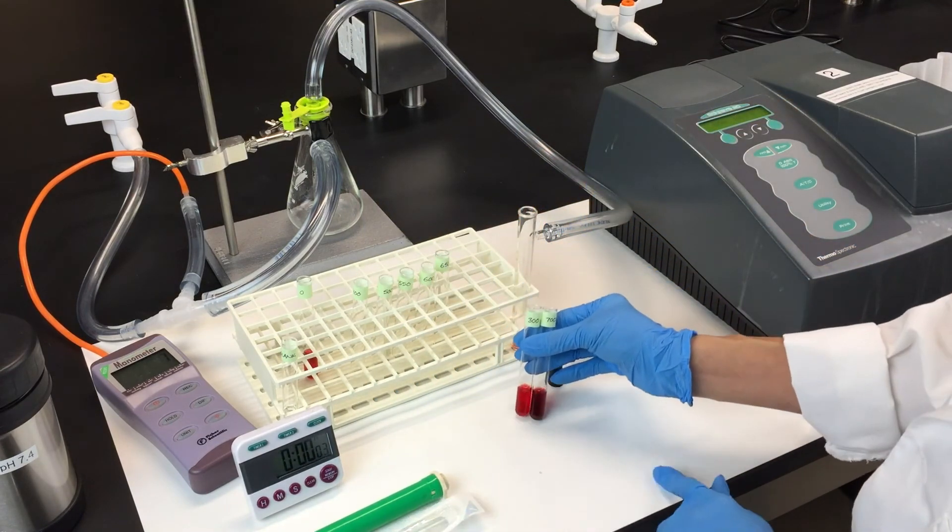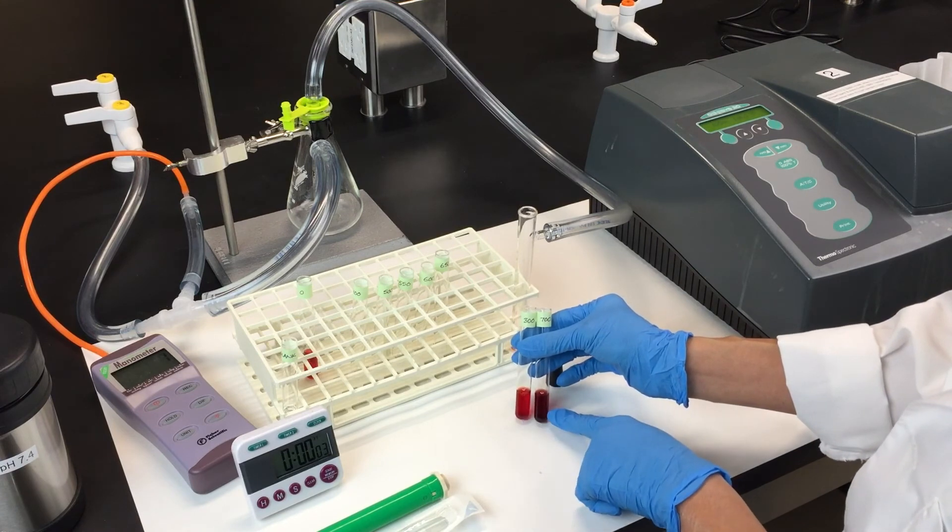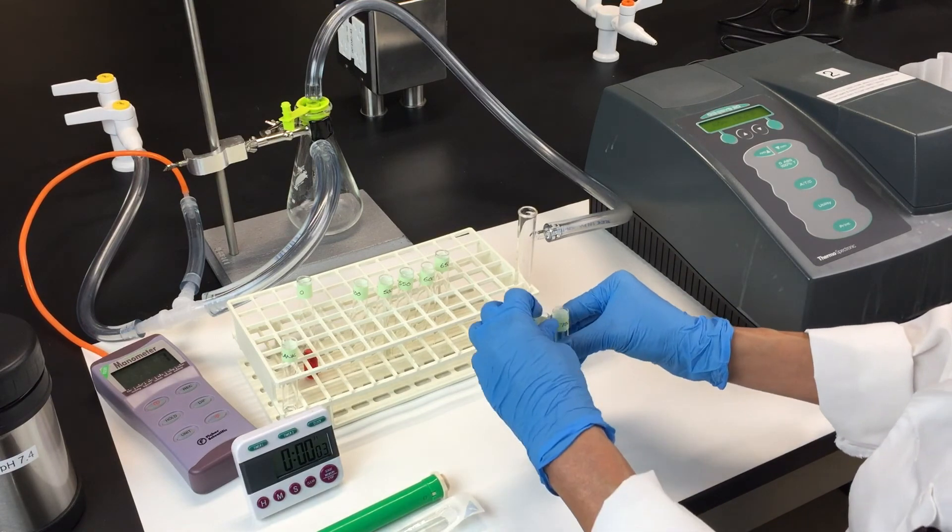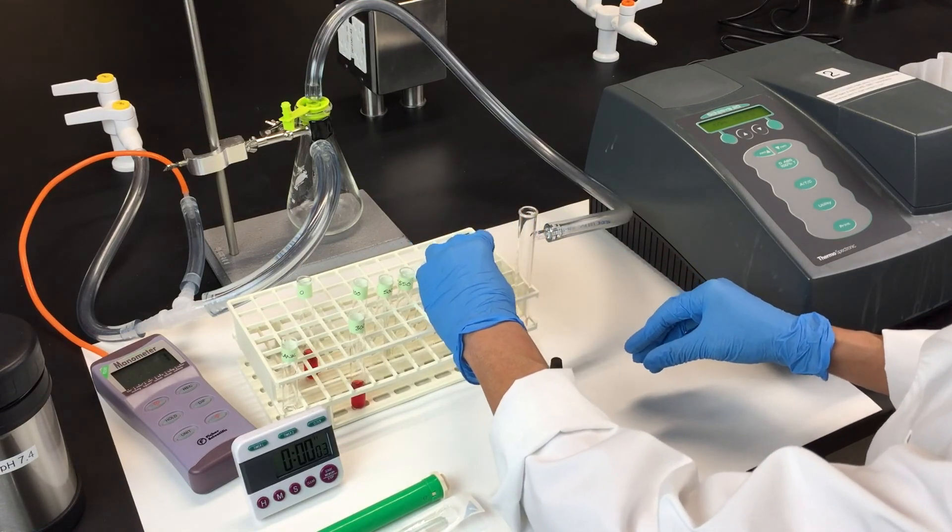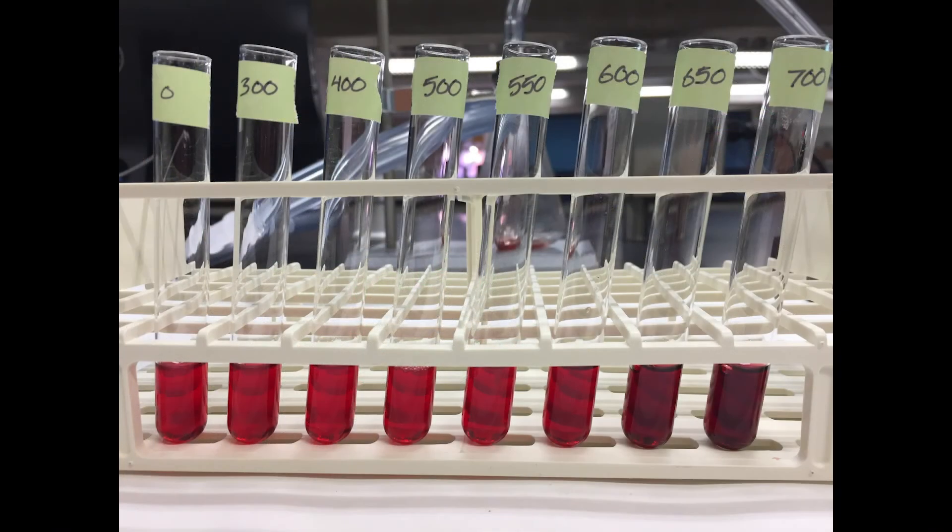Here you can see the difference between the 300 and 700 millimeter mercury tube. Once you've finished all the vacuum pressures, your tubes should look something like this. You can see that the hemolysate gets darker as it becomes more deoxygenated under higher vacuum pressures.